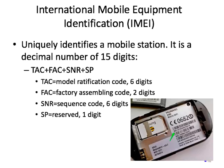The IMEI uniquely identifies a mobile station. It's a decimal number that consists of 15 digits. The 15 digits include a TAC, or model ratification code, which is the first six digits; then the factory assembling code, which is two digits; a sequence code; and then a reserved one digit.